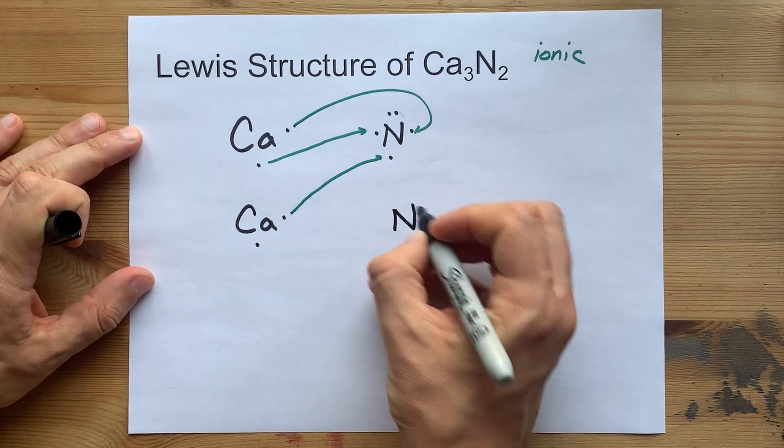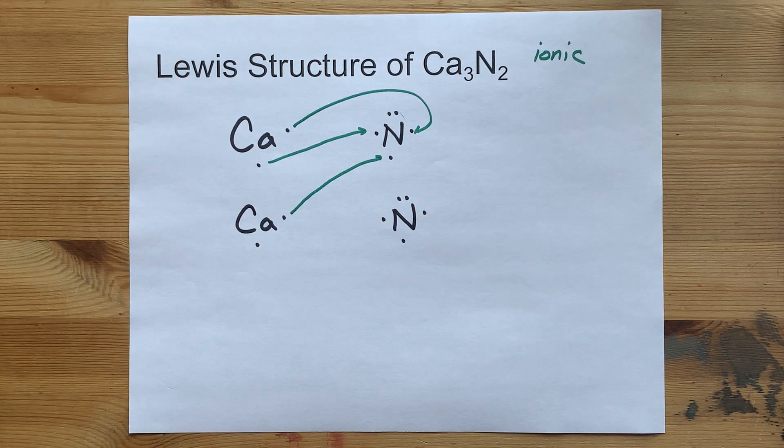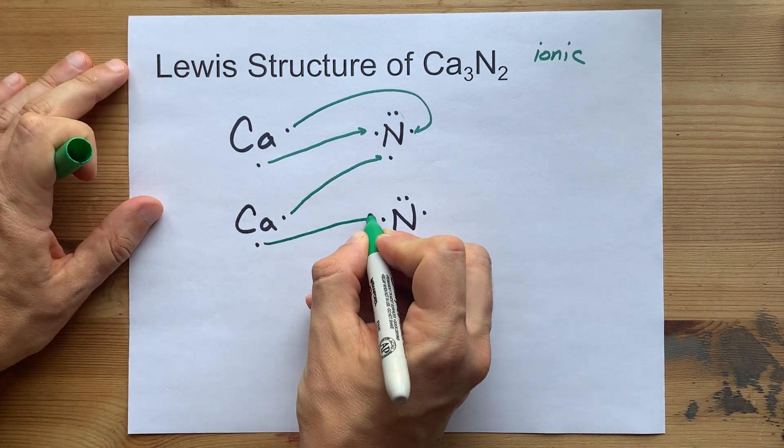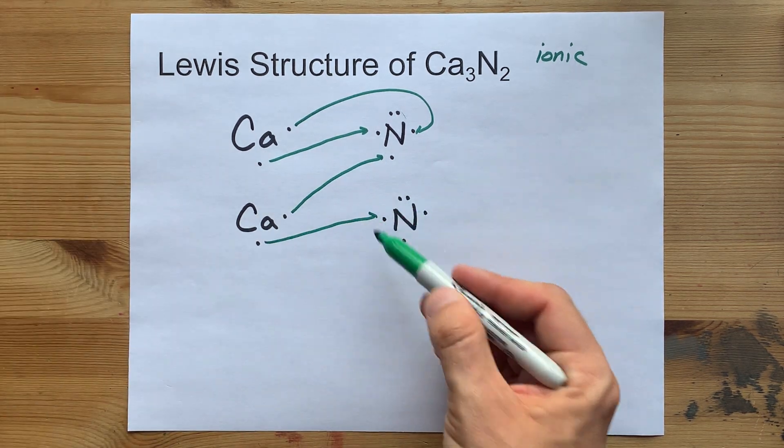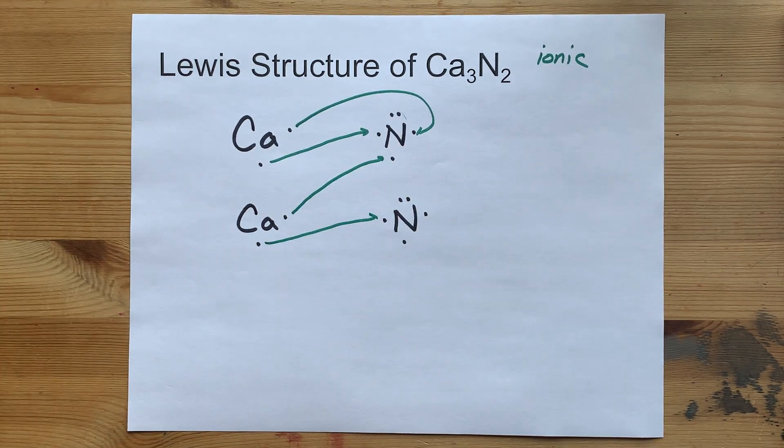So, bring in another nitrogen. One, two, three, four, five. That calcium will give its electron away to nitrogen, but now that nitrogen only has six. It needs eight to be satisfied.